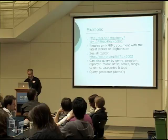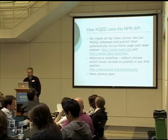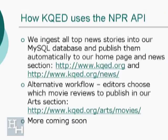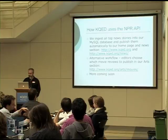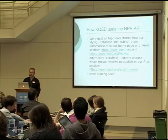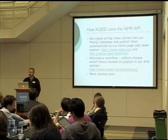KQED uses the NPR API to find all the top NPR stories and publish them to our news site and homepage. We've also developed an alternative workflow which enables editors to choose which stories to publish — so we have two methods, depending on what content editors want to publish and how. We ingest the content directly into our database. There's no restriction on how you use the content once you've pulled it out of the API, so it's pretty powerful.